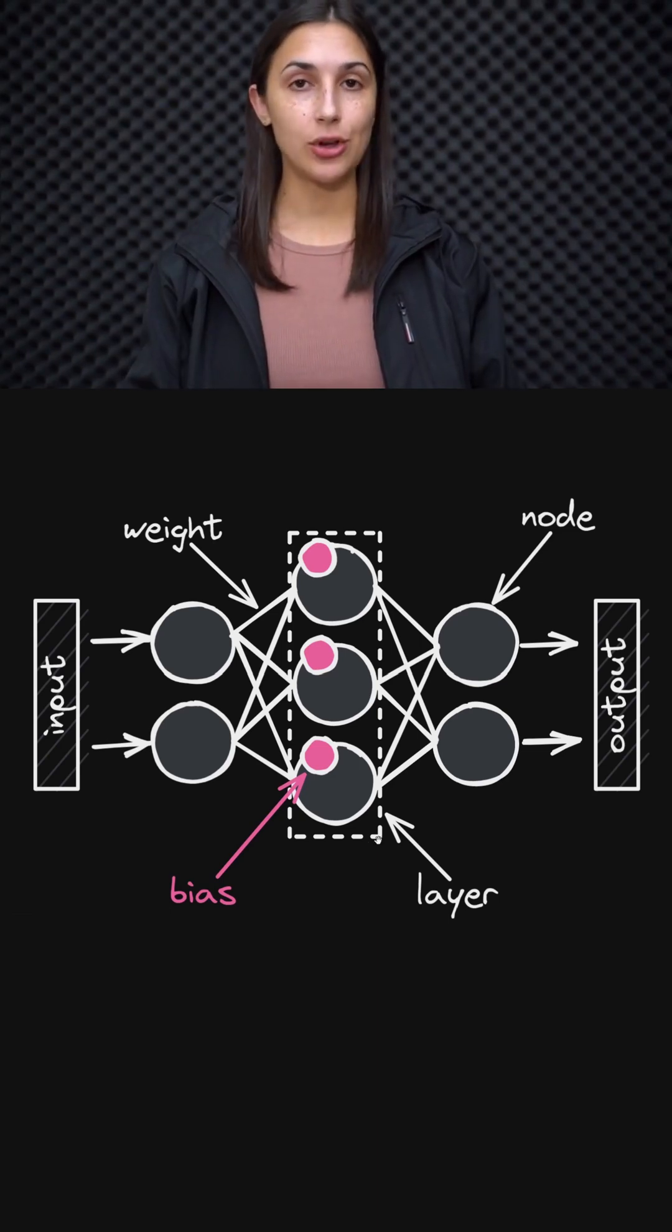Generally, in a neural network, each node has its own corresponding bias. These bias terms are also referred to as bias nodes or bias neurons.